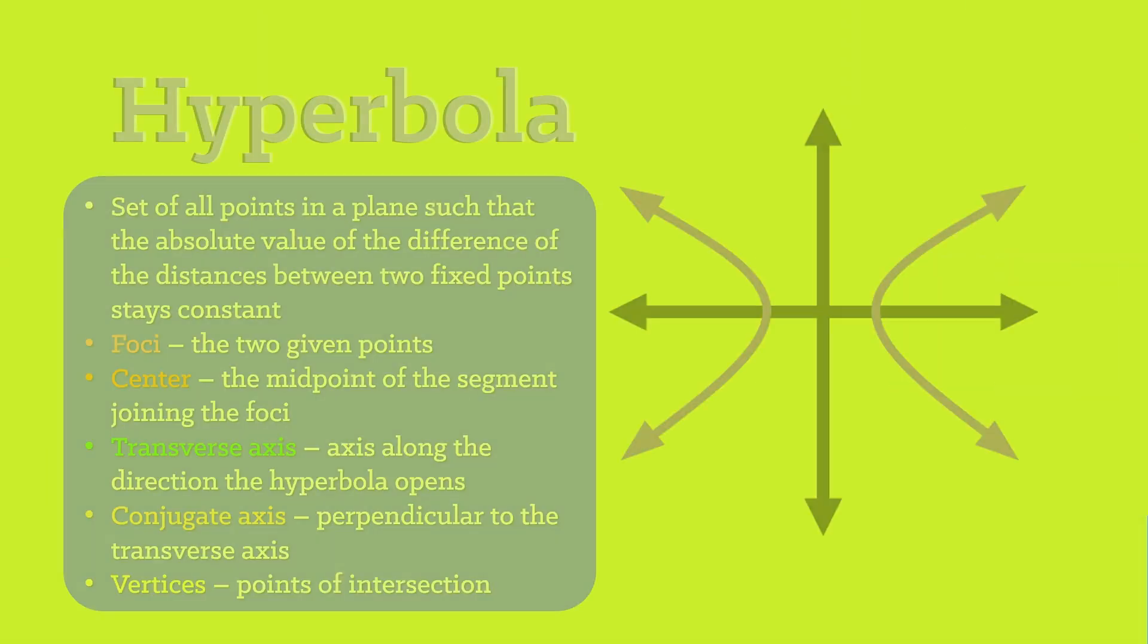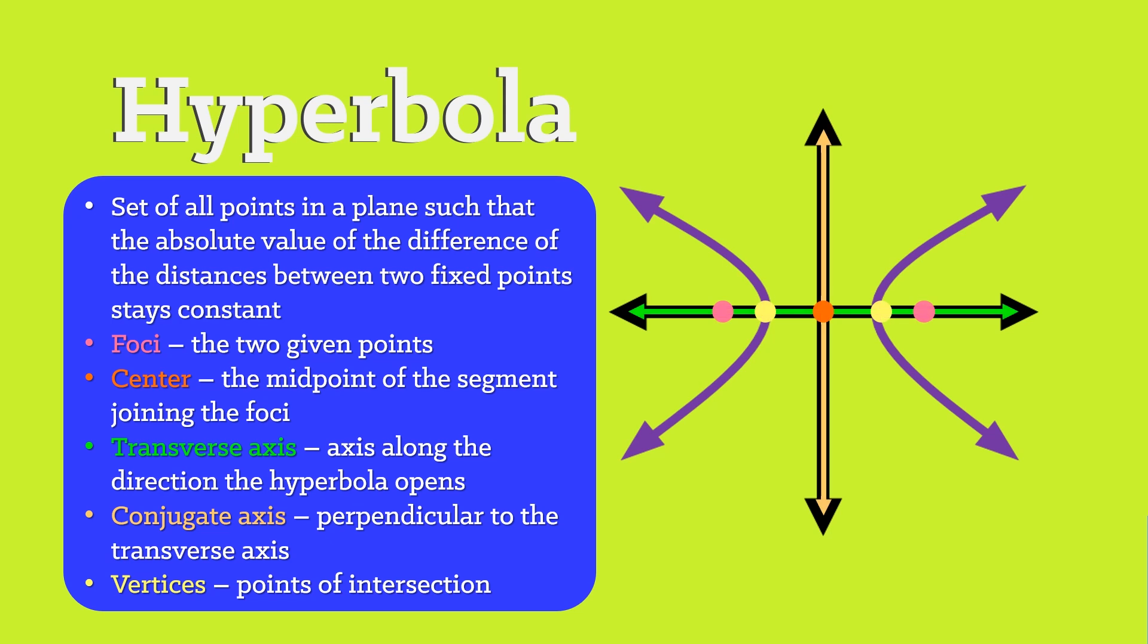Up next is hyperbola. It is a set of all points in a plane such that the absolute value of the difference of the distances between two fixed points stay constant. It contains parts like the foci, center, transverse axis, conjugate axis, and the vertices.